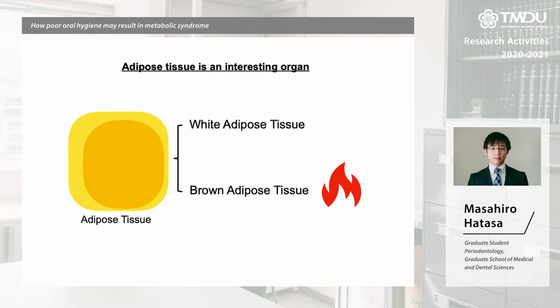Recently, brown adipose tissue has been attracting attention for its unique function of generating heat and expending energy. The functional decline of brown adipose tissue can relate to obesity.